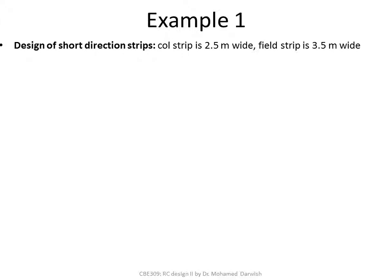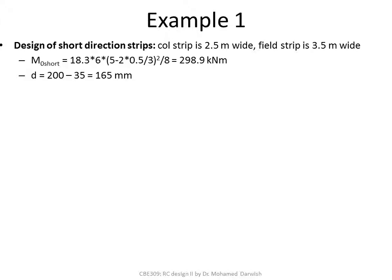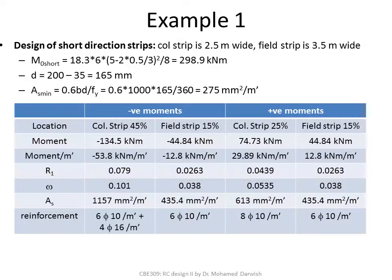In the short direction, the field strip width is 3.5 m versus the column strip width of 2.5 m. D = 200 − 35 = 165 mm. The M₀_short calculation follows the same concept but D has changed, so the minimum steel area changes accordingly. When dividing the moment figure by the field strip width, you divide by 3.5 m, not 2.5 m. The base mesh of ⌀6/510 remains the same, but additional steel values are slightly different.